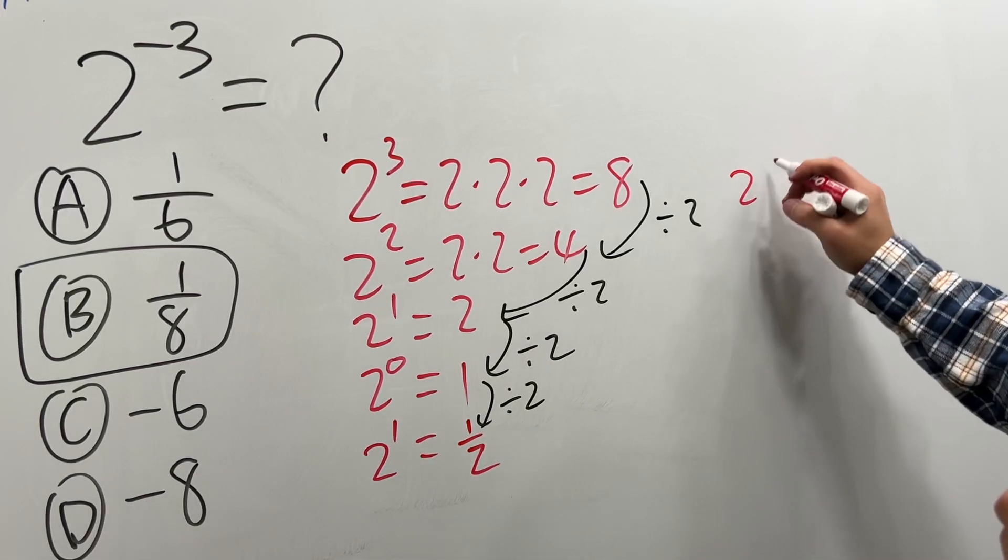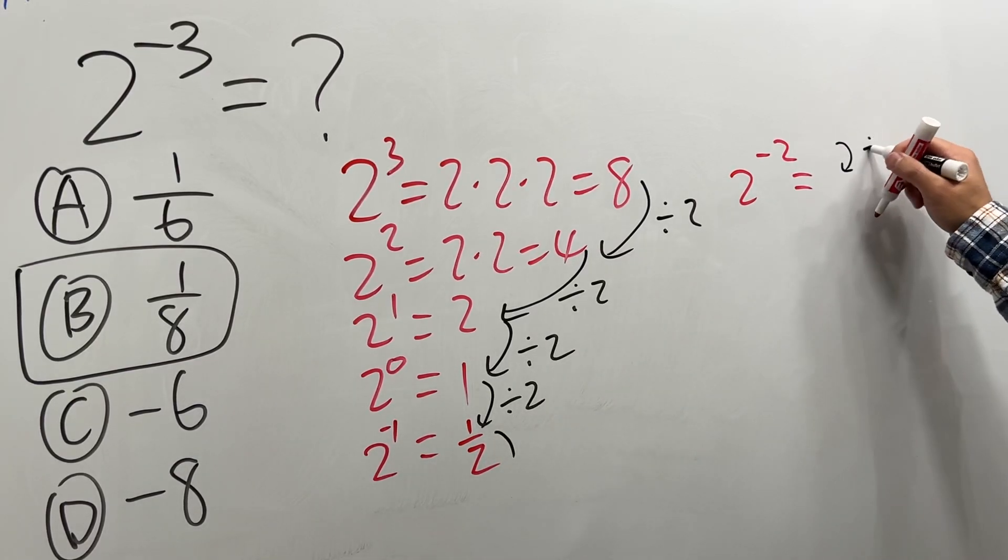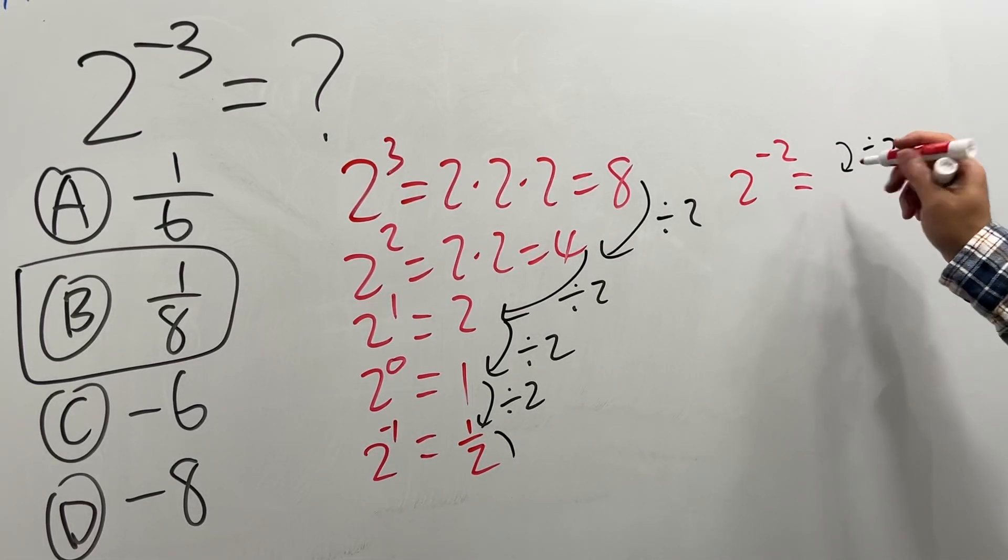Continue, if you have 2 to the negative 2, and that will give you, divide this by 2. So 1 half divided by 2, you get 1 over 4.